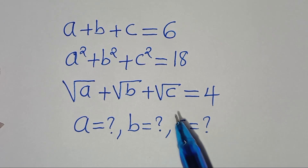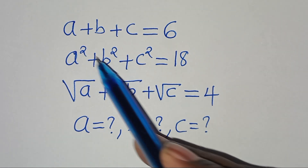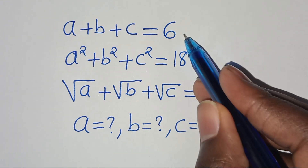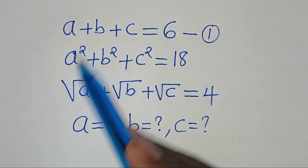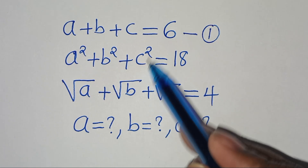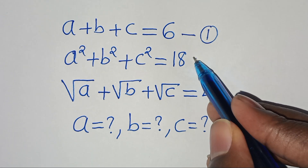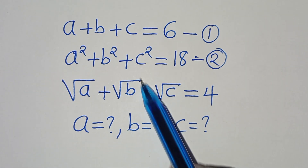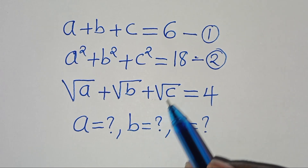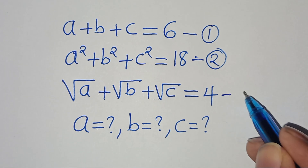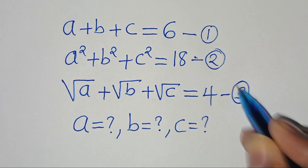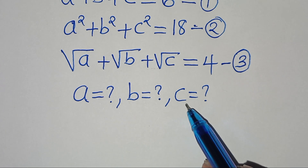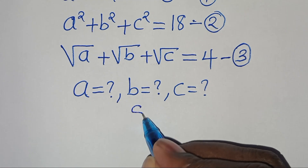Hello everyone, welcome. We need to solve this algebra problem. We have three equations: equation 1 is a + b + c = 6, equation 2 is a² + b² + c² = 18, and equation 3 is √a + √b + √c = 4. We need to find the values of a, b, and c.